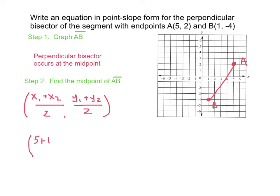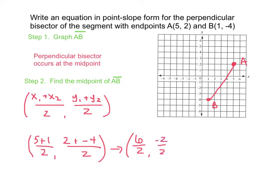We add the x's: 5 plus 1, and divide by 2. Then we do 2 plus negative 4 divided by 2. A is 5 comma 2, and B is 1 comma negative 4. So 5 plus 1 is 6 divided by 2, and 2 plus negative 4 is negative 2 divided by 2. Finally, you have 3 comma negative 1, because 6 divided by 2 is 3 and negative 2 divided by 2 is negative 1.